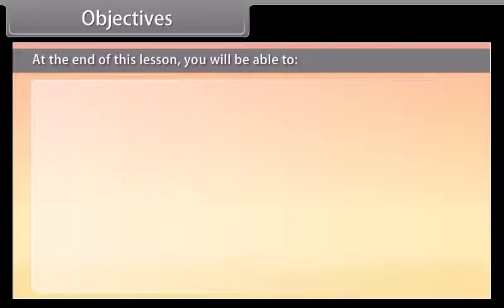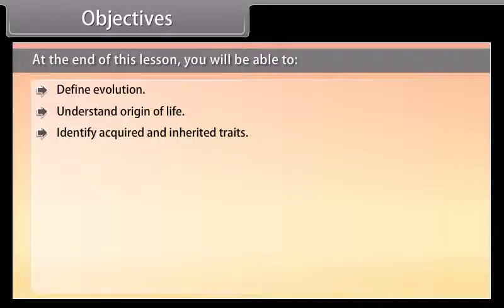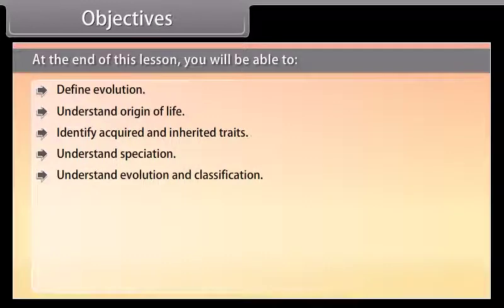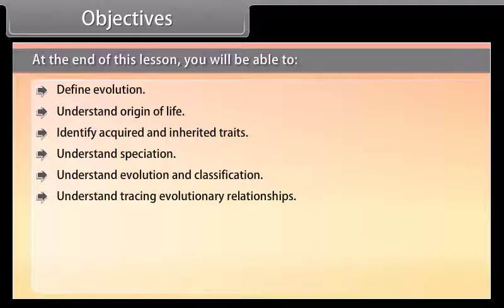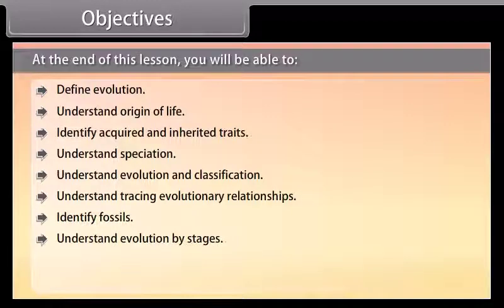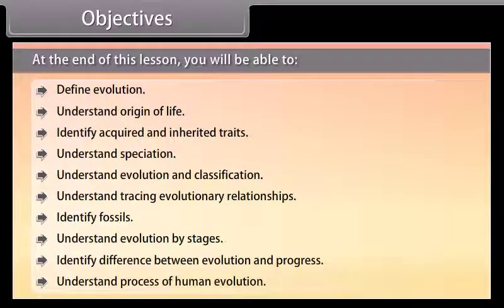Objectives: At the end of this lesson, you'll be able to define evolution, understand origin of life, identify acquired and inherited traits, understand speciation, understand evolution and classification, understand tracing evolutionary relationships, identify fossils, understand evolution by stages, identify difference between evolution and progress, and understand the process of human evolution.